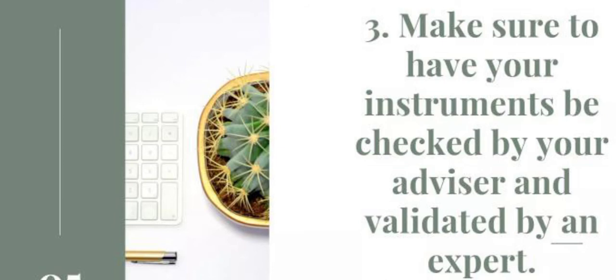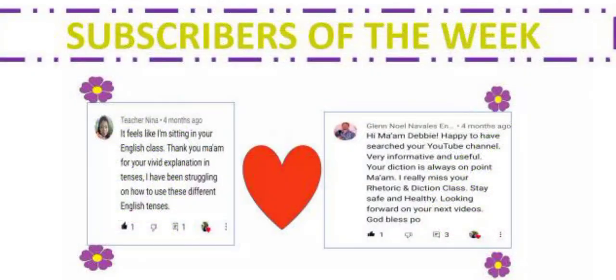So those are the tips I can share in constructing your research instrument. Number one: the research instrument should be based on the SOP. Number two: match a good instrument to answer the questions in your SOP. Number three: make sure to have your instruments checked by your advisor and validated by experts. Hopefully this helps those who are doing research — start thinking now about how you will match your instrument to your SOP.